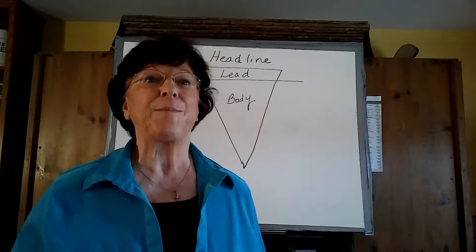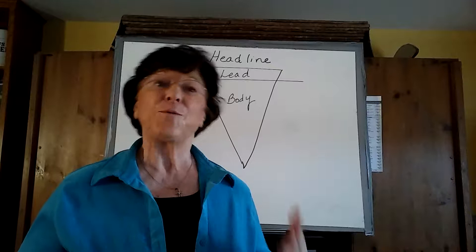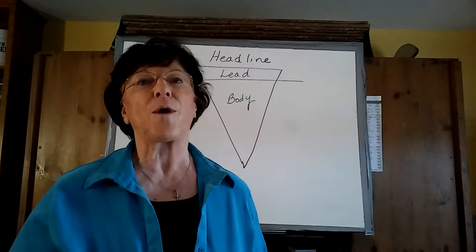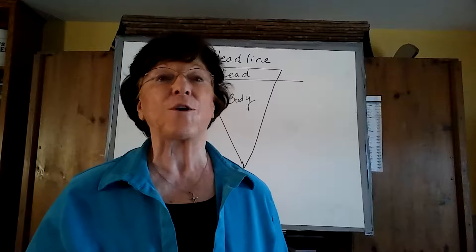Yesterday we talked about the difference between an essay and a journalistic article. Today I'm going to hone in a little bit more on how to write the journalistic article, and the first thing you need to know is it's written as what's called an inverted pyramid. That's what this triangle is back here, inverted pyramid.